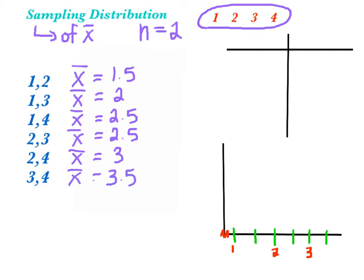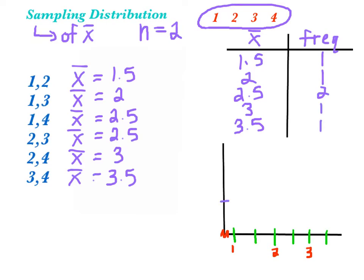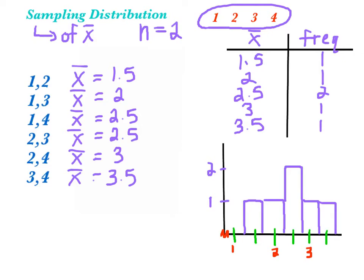Let's make a frequency table for this. These are all the different values of x-bar, and this is the frequency at which they happen. Our possible values are 1½, 2, 2½, 3, and 3½. All of them happen once except for 2½. Let's make a histogram of these values: 1½ happens one time, 2 also happens one time, 2½ is the one that happened twice, and then 3 and 3½ both happen once. This is the sampling distribution of size 2 from the population 1, 2, 3, 4 — the sampling distribution of the sample mean, or x-bar.